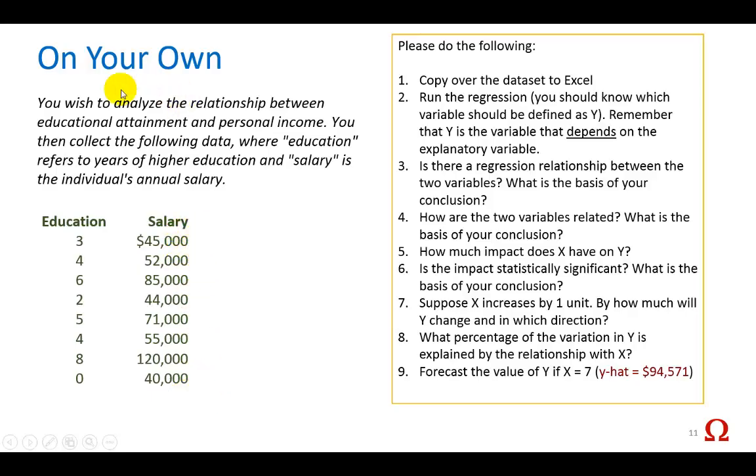Now go ahead and try your hand using this data set. You can copy it onto Excel and read over these instructions. If you do all things correctly and forecast the value of Y if X is 7 you're going to find the forecast value to be 94,571.